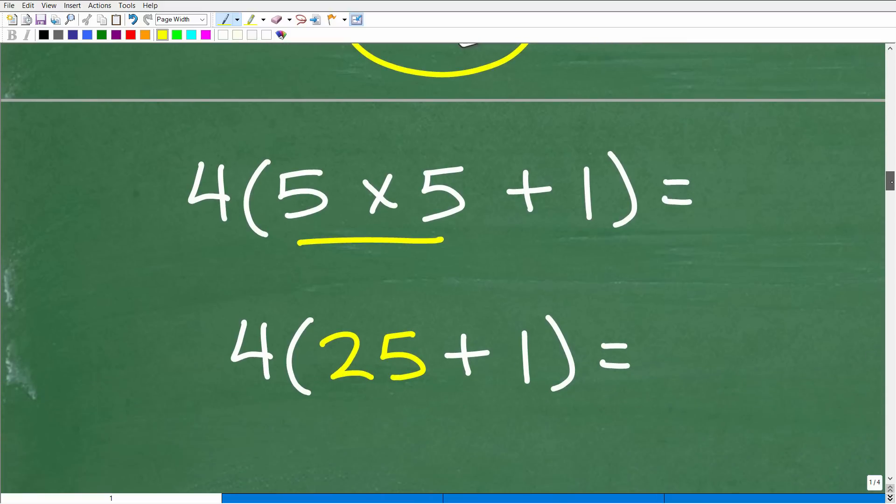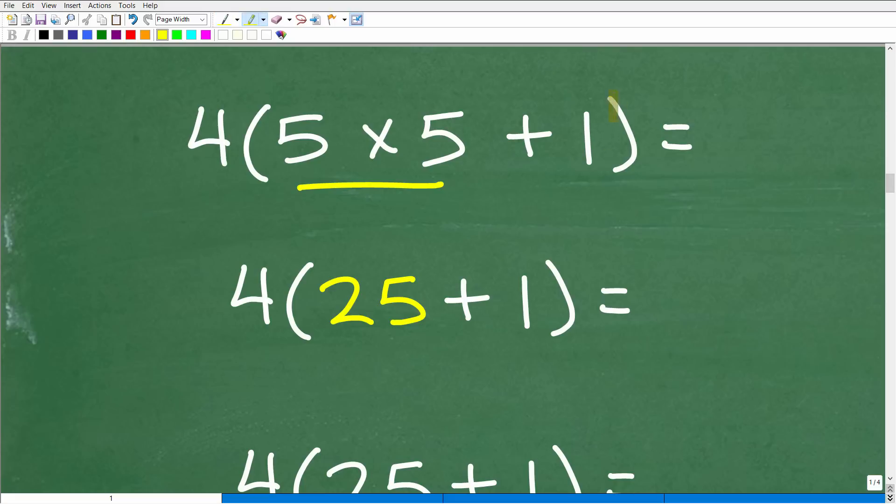So, again, we're not done with the P, the parentheses part here. So we're still working inside the parentheses. So we have 5 times 5 plus 1. It's pretty clear that multiplication is going to come before addition. So 5 times 5 is 25.